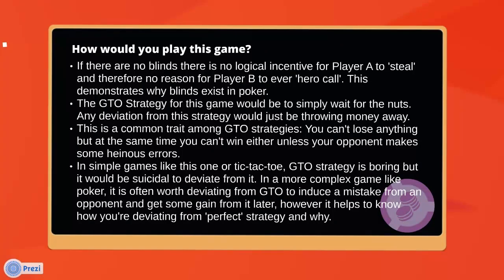If there were no blinds, there would be no reason for player A to ever steal — you know, take a two and go all-in — because if player B then folds, player A doesn't win anything. The only reason to go all-in would be if you think B will call with a worse hand. And B would never call with a five when it costs him nothing to fold. So the GTO strategy for that game would just be to simply wait for the best possible hand. It's quite a common trait among GTO strategies — the GTO strategy is unbeatable, but at the same time you don't really win very much unless your opponent does something stupid.